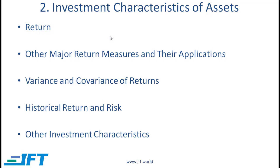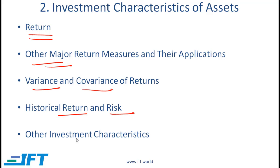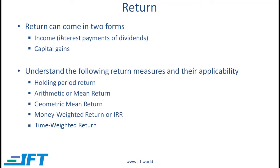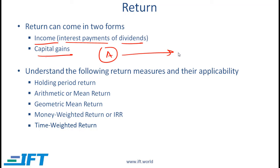Section 2 covers the investment characteristics of assets. We talk about basic return measures, major return measures and their applications, then variance and covariance of returns, the relationship between return and risk, and other investment characteristics. Return can come in two forms: income — for bonds you get coupon or interest payments, for stocks you get dividends — or capital gains, where you buy an asset and its price goes up over time.